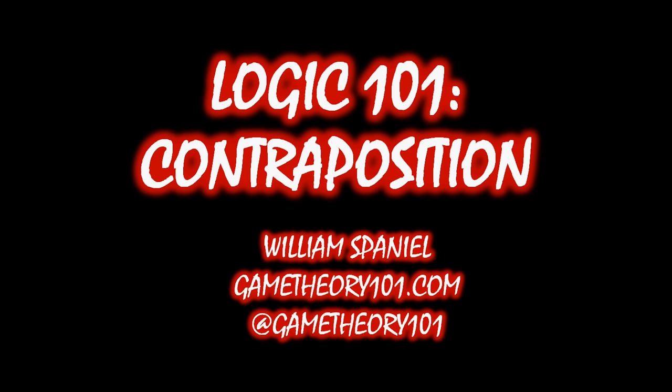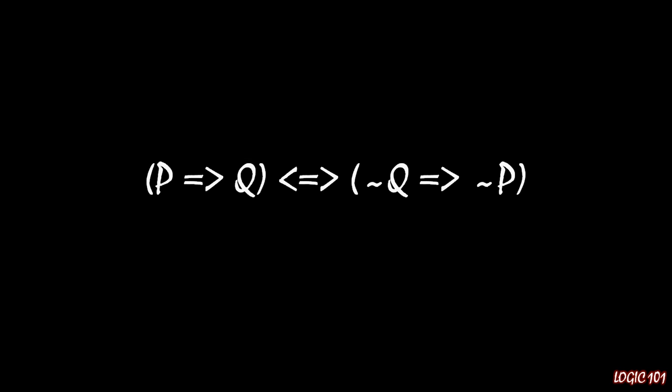Contraposition works something like this. You start off with a standard implication, if P then Q. You flip-flop the antecedent and the consequent, and you negate both of them. So that leaves you with if not Q, then not P.